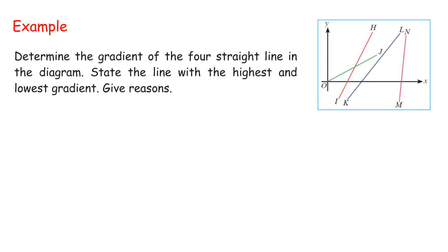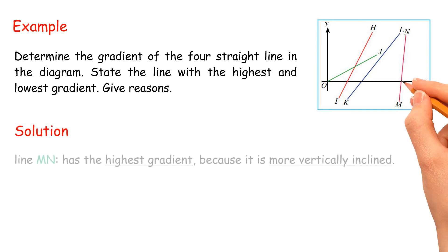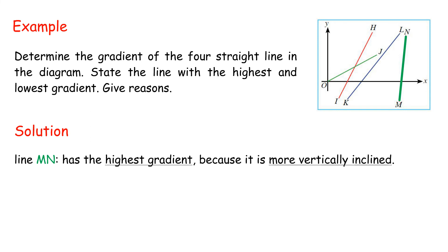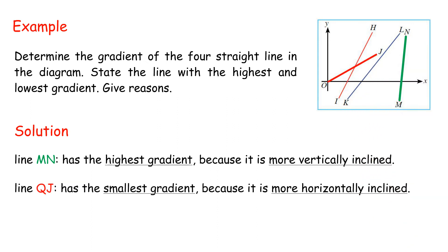Example: Determine the gradient of the 4 straight lines in the diagram. State the line with the highest and lowest gradient and give reasons. Solution: Straight line MN has the highest gradient because it is more vertically inclined. Straight line QJ has the smallest gradient because it is more horizontally inclined.